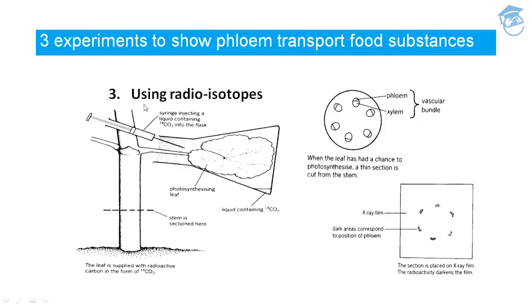The third experiment uses a radioisotope. A leaf is supplied with radioactive carbon in the form of 14CO₂. A syringe injects a liquid containing 14CO₂ into a flask in which the leaf is inserted. This photosynthesizing leaf performs photosynthesis and makes its own food, incorporating the radioactive carbon into the sugars it produces.